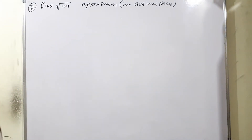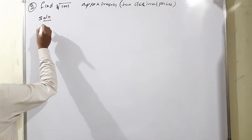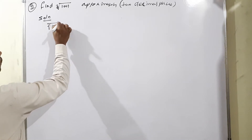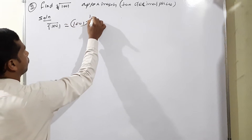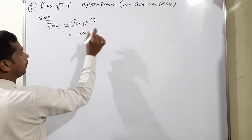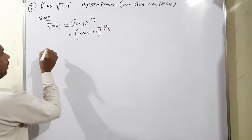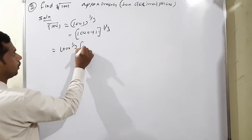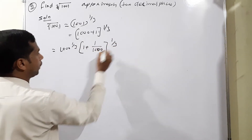Moving to Question 2 from Exercise 5.4. The given condition is the cube root of 1001. We can expand this as (1001)^(1/3), which equals (1000 + 1)^(1/3). Taking 1000 as common outside: 1000^(1/3) × (1 + 1/1000)^(1/3).